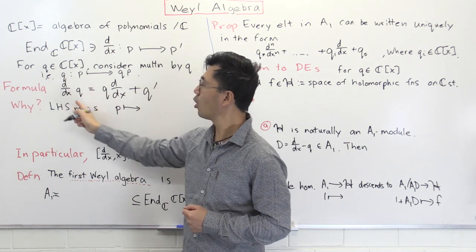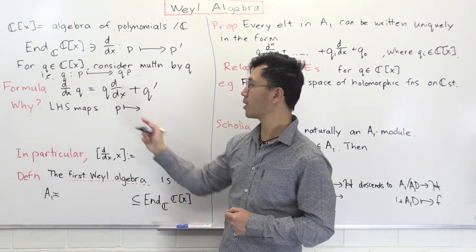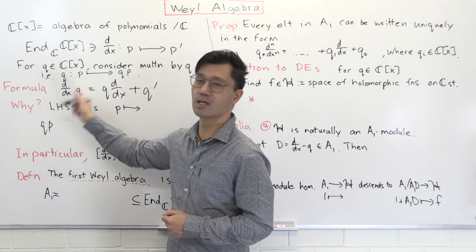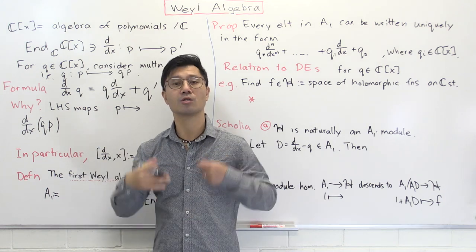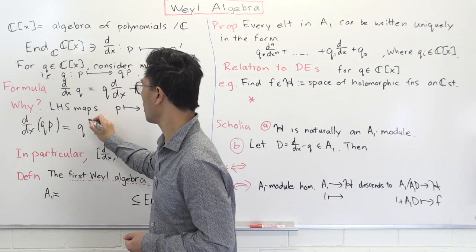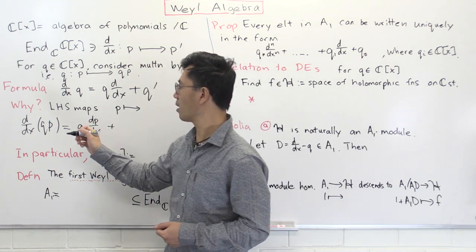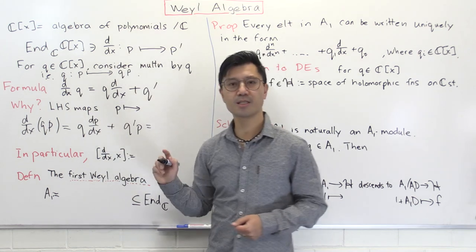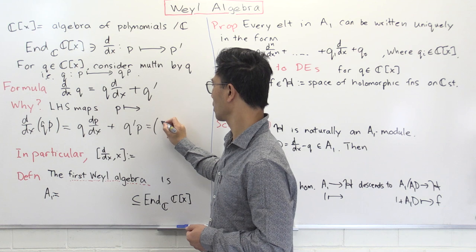Let's see why this is true. We look at the composition d/dx · q acting on a polynomial p. First you apply the q map — multiplication by q — and then you apply the derivative. So you're taking the derivative of q times p, and you use the product rule. You get q times dp/dx, plus q' times p. In the first term, I've done the derivative first and then multiplied by q — that's q · d/dx. In the second term, I've added q' times p.